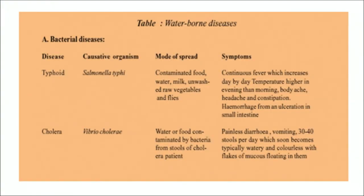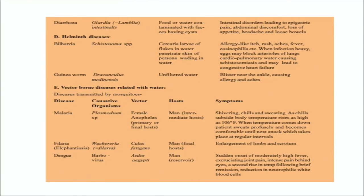The causative agents and symptoms are shown in tabular form in the next few slides. Typhoid, cholera, diarrhea and leptospirosis are bacterial diseases. Infective hepatitis is a viral disease. Amoebic dysentery is a protozoan disease as shown in this figure. Bilharzia, guinea worm and other helminths are helminthic diseases, and malaria, filaria and dengue are vector-borne diseases as shown in the next slide.